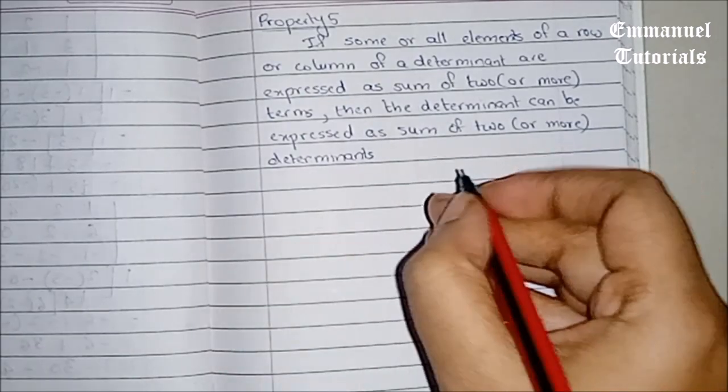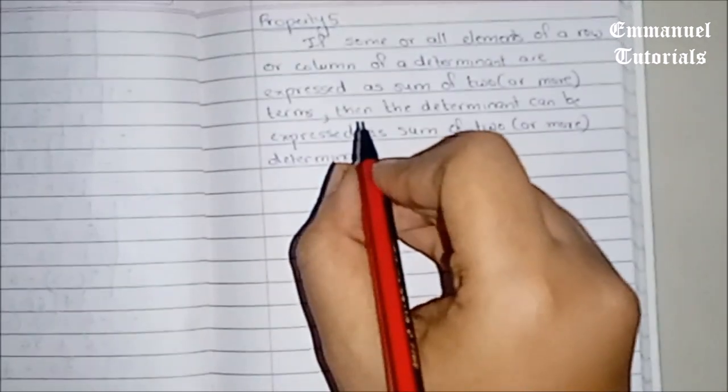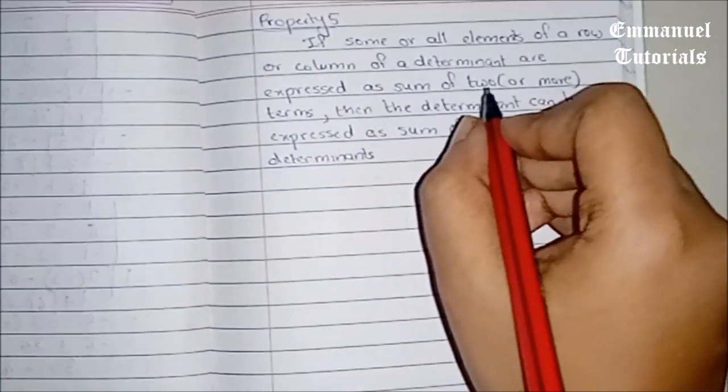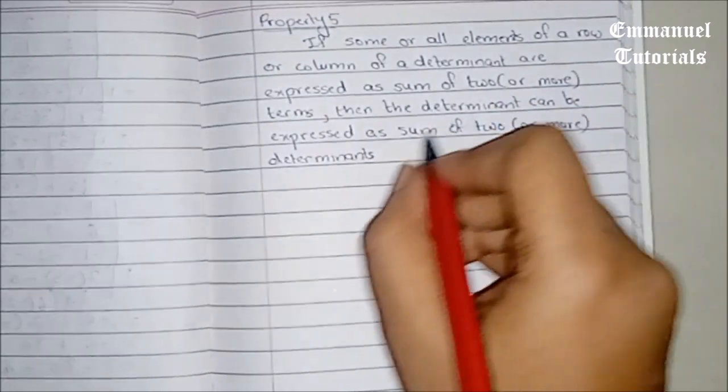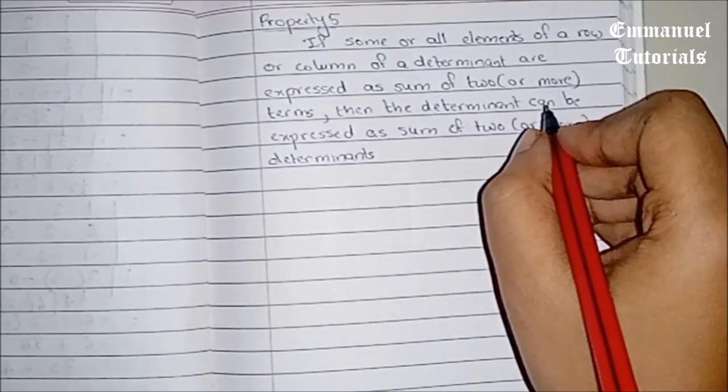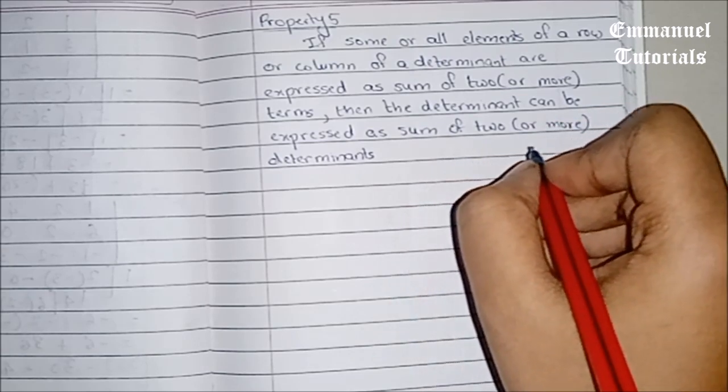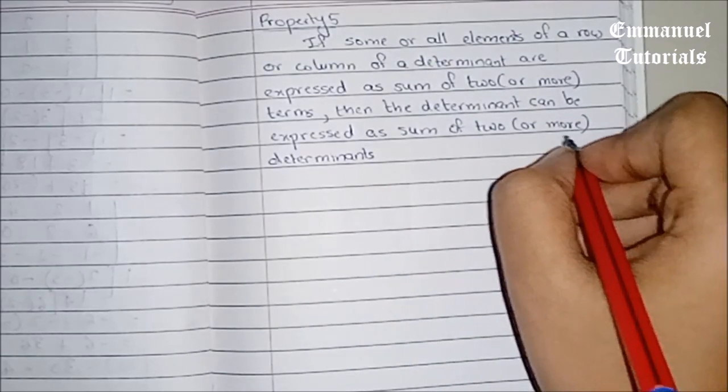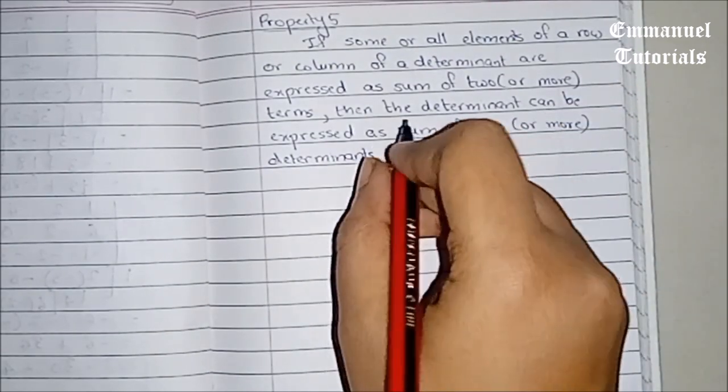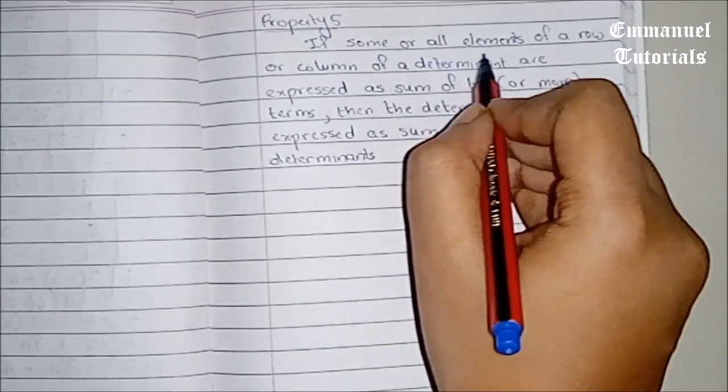So this video is going to be helpful for them. Let's start. What does Property 5 say? It says that if some or all elements of a row or column of a determinant are expressed as sum of two or more terms, then the determinant can be expressed as sum of two or more determinants.